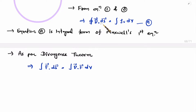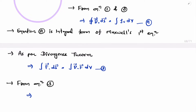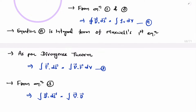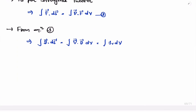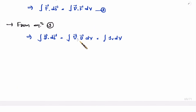Now, we can apply this divergence theorem to the integral form. So, if you apply divergence theorem to this integral form, then one can say this surface integration of electric flux density equals the divergence of electric flux density times volume integration, and that equals the volume integration of volume charge density.